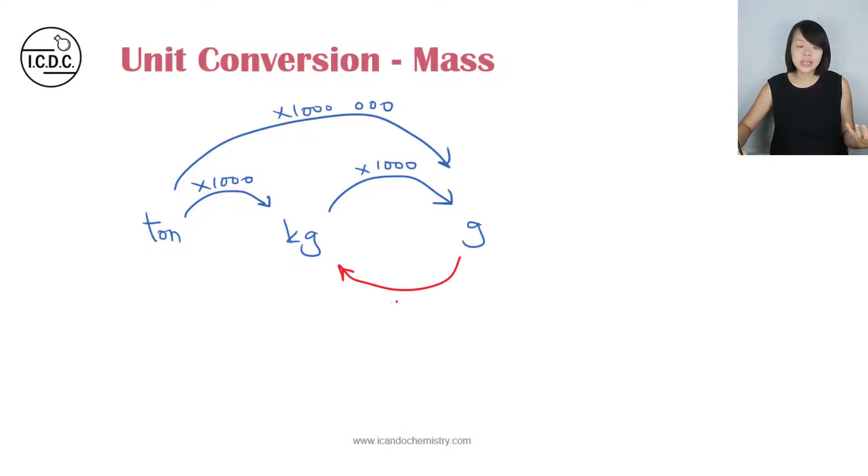So from grams to kg, we just need to divide by a thousand. From kg to tons, we just need to divide by another thousand. So from grams to tons, we divide by a thousand-thousand, which is divide by a million.